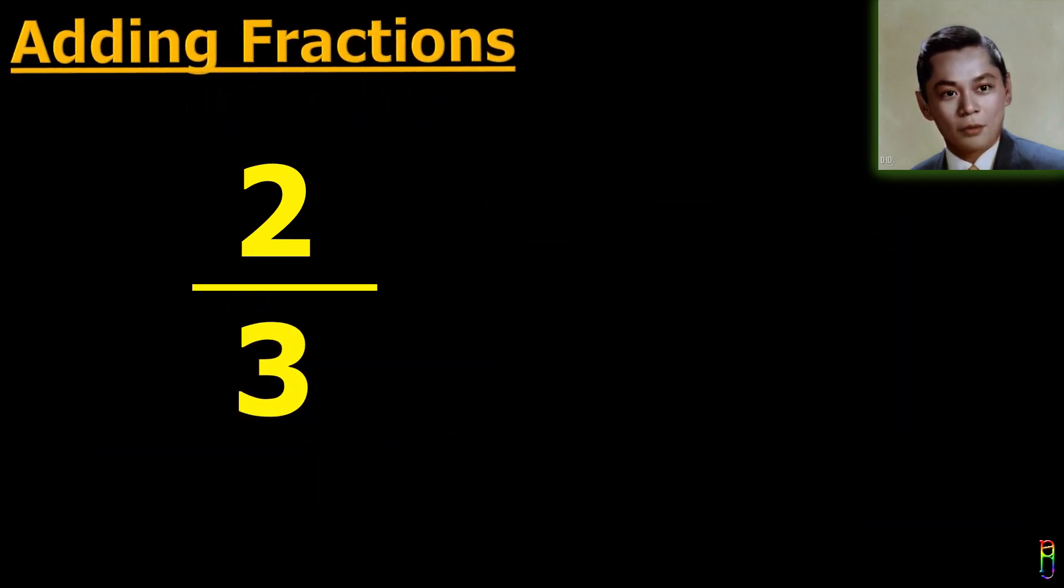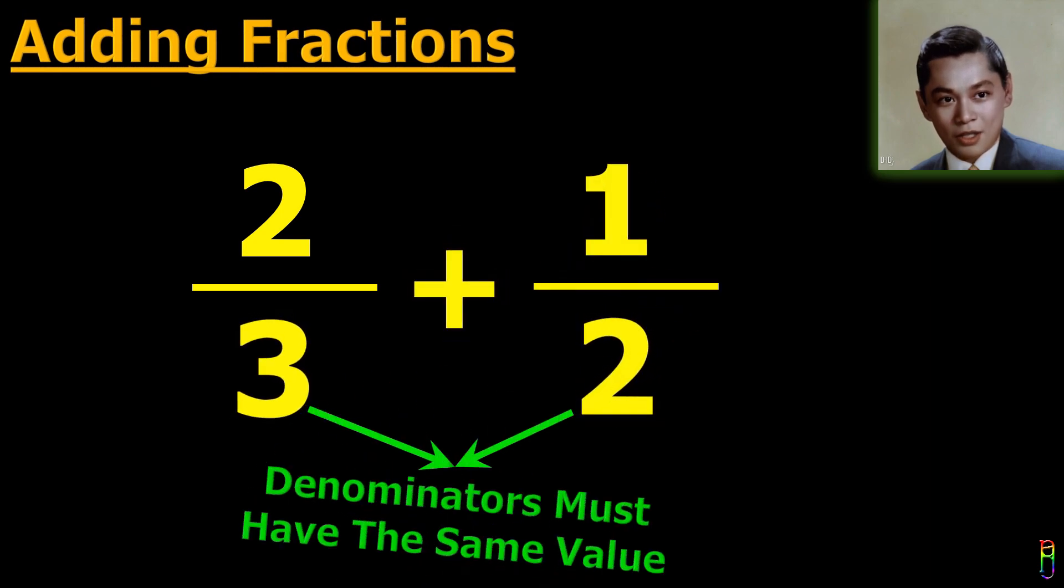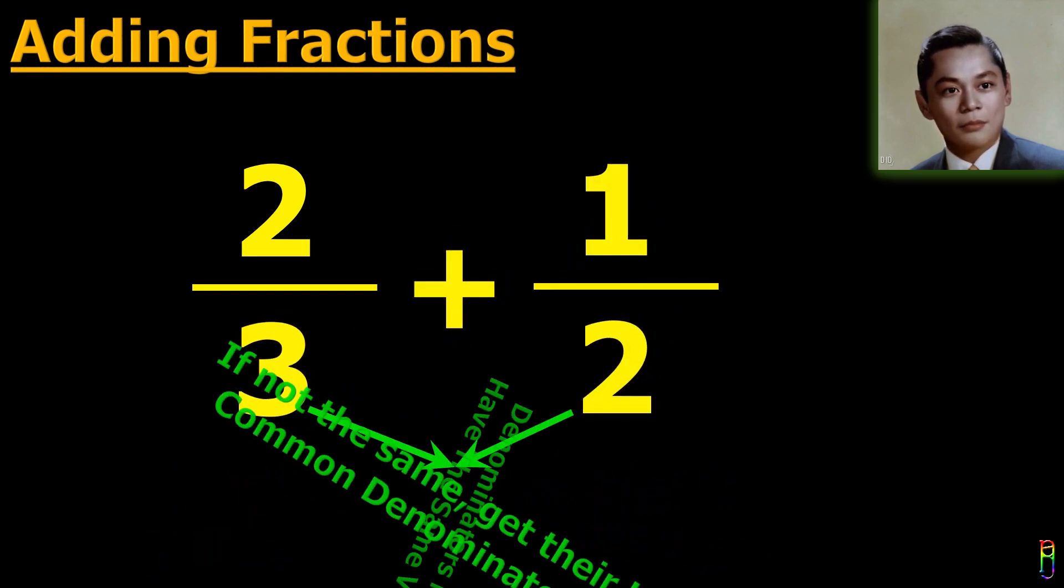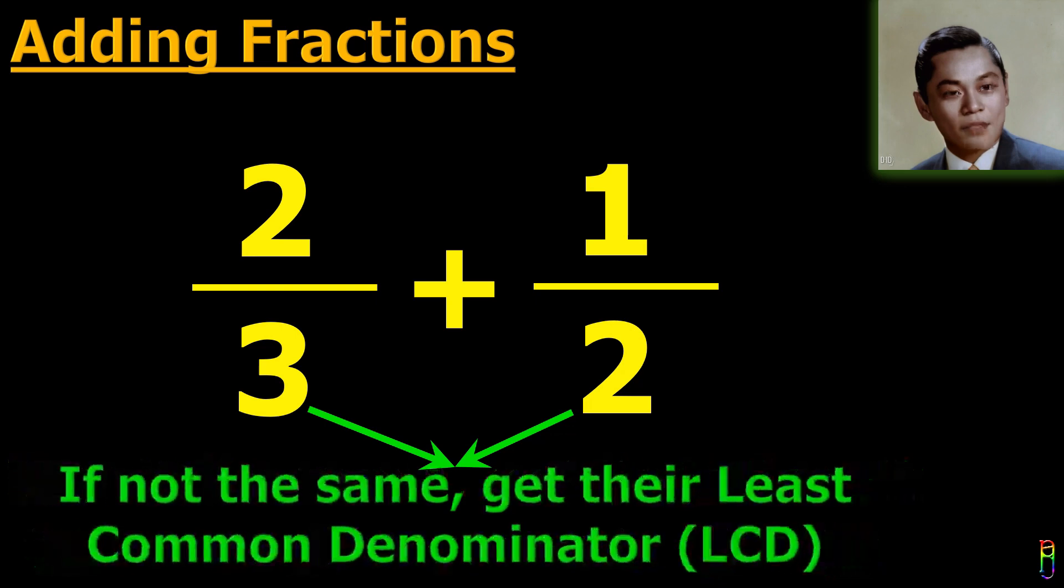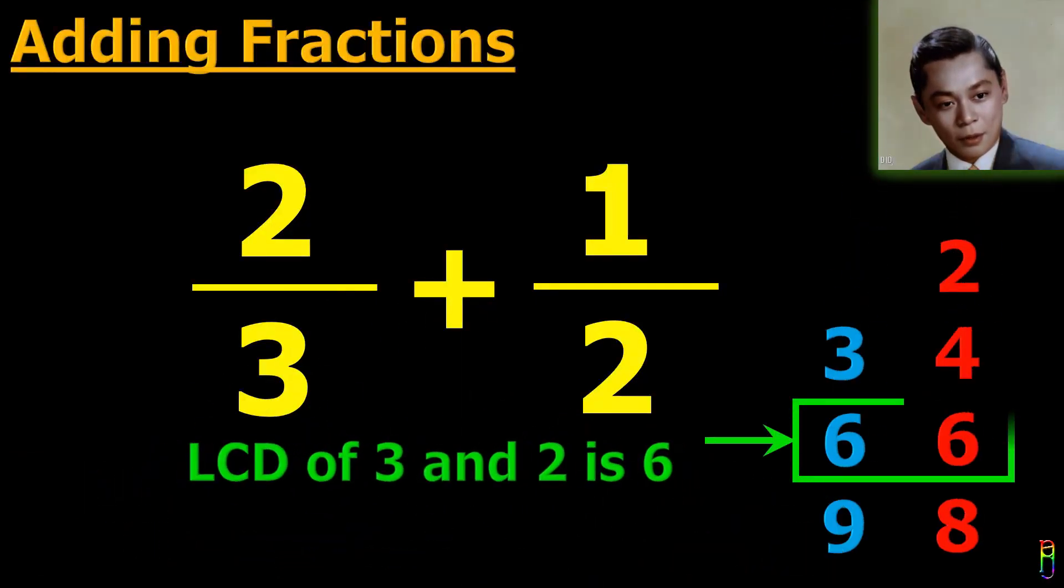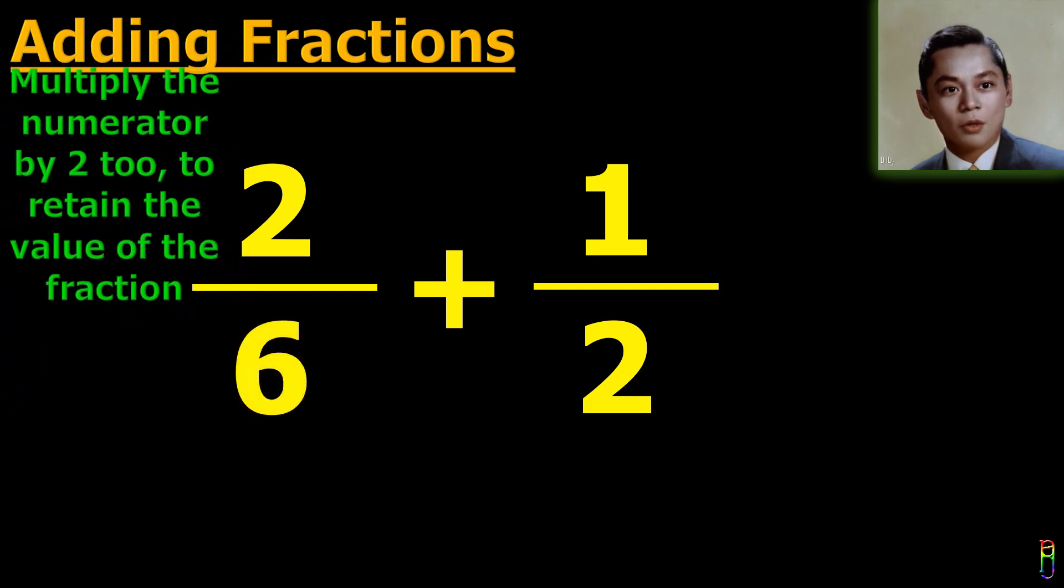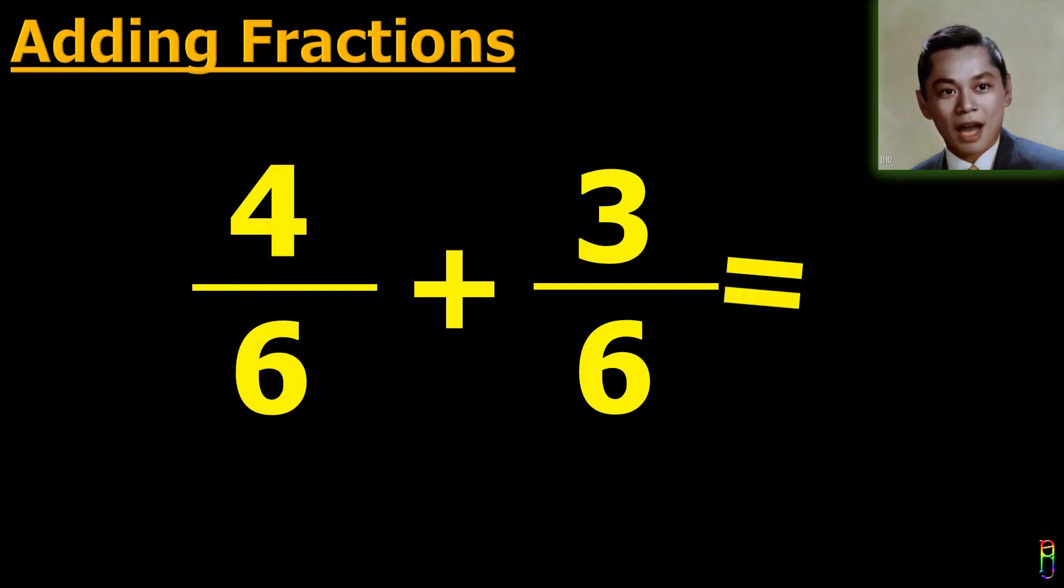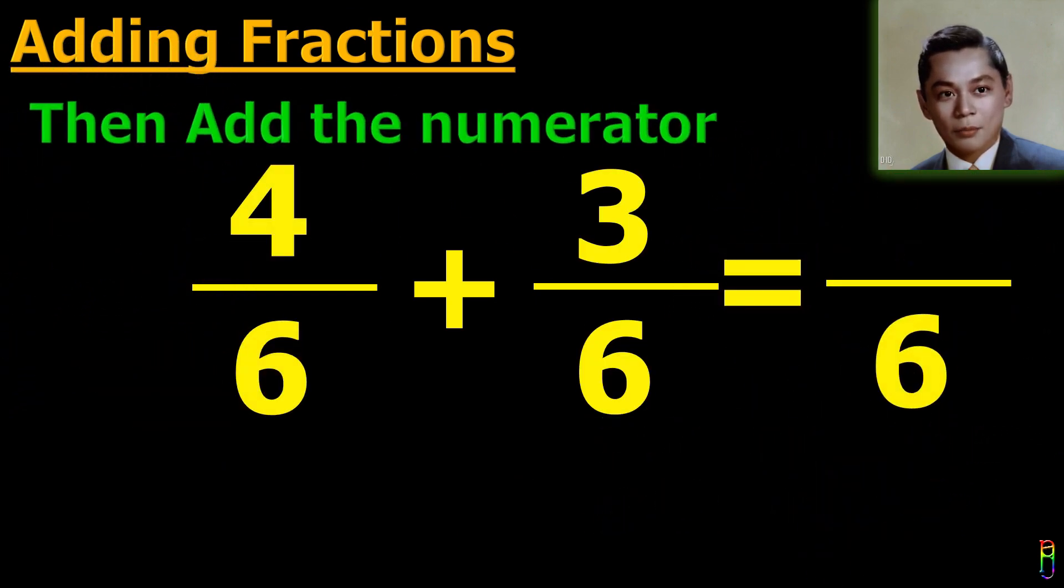Now, let's talk about how to add fractions. When adding fractions, the denominators must be the same. If they're not, you'll need to find a common denominator before you can add them. The common denominator is the smallest multiple that both denominators share. Once you have found a common denominator, you simply add the numerators and put the sum over the common denominator.